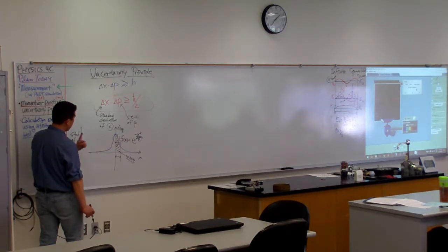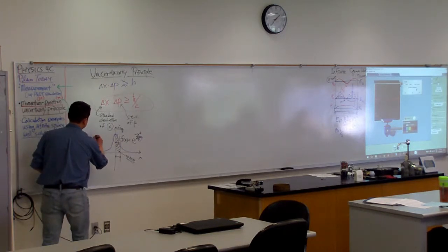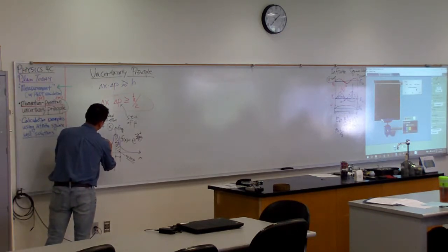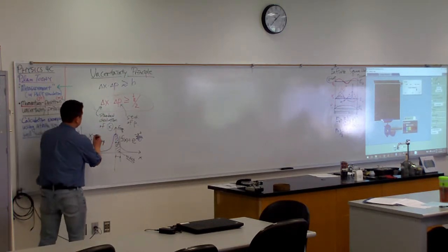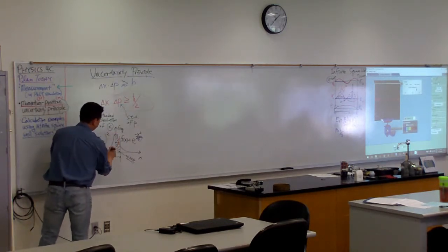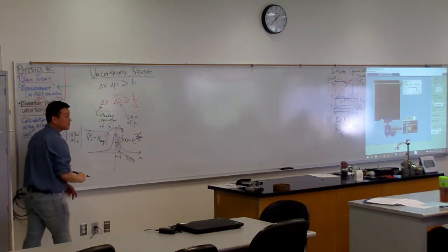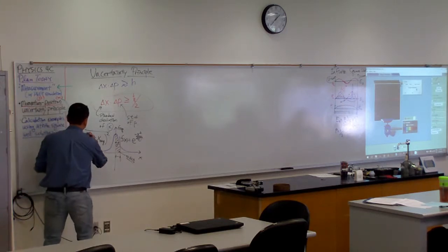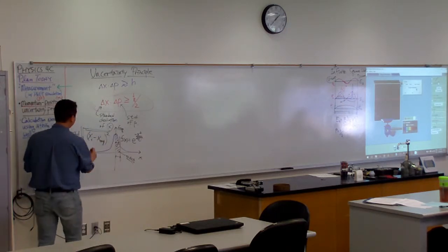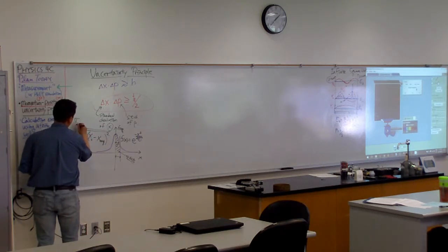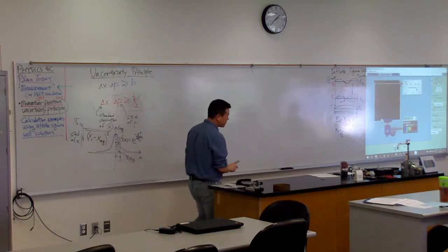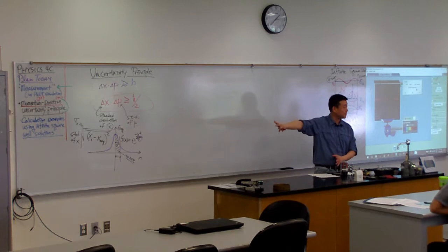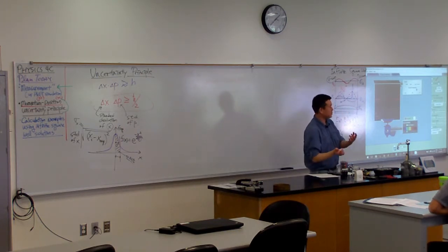So standard deviation of x is defined as this. Let's see. You take each individual value of the thing that you measure. You subtract the average of that value that you are trying to measure. You square it, and then you average it again. Right? And then square root of the whole thing. So this is the definition of sigma of x. And in upper division quantum mechanics, there are some algebraic manipulations you do to actually make that a little bit simpler. We won't do that. It's not really necessary for us.